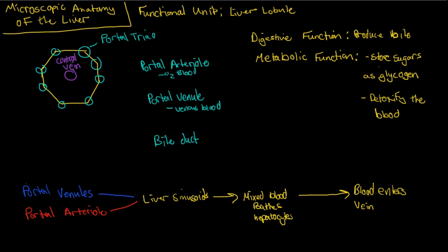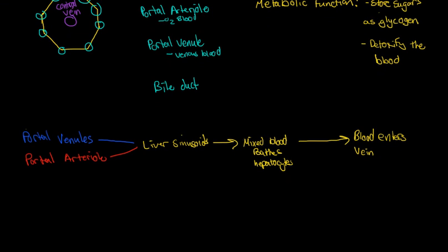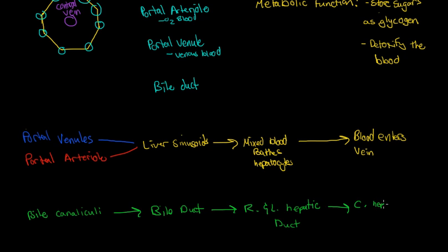That third part of the portal triad is the bile duct. Bile comes from the hepatocytes and comes from the bile canaliculi to the bile duct running away from the liver into the right and left hepatic ducts, and then into a common hepatic duct.